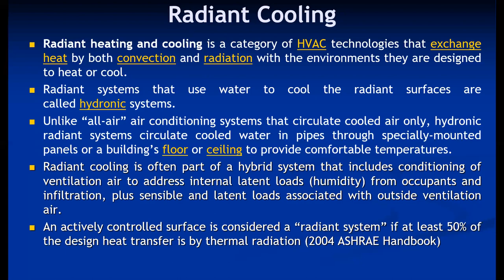An actively controlled surface is considered a radiant system if at least 50 percent of the design heat transfer is by thermal radiation. This is as per ASHRAE standards, 2004. If the building walls or control surfaces absorb heat due to radiation for at least 50 percent, then and only then the system is regarded as a radiant system.